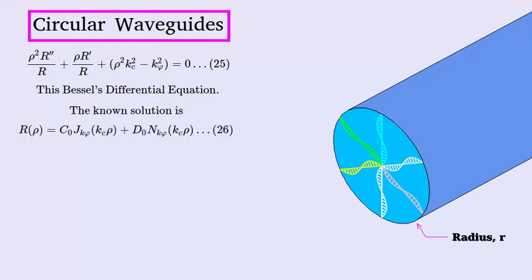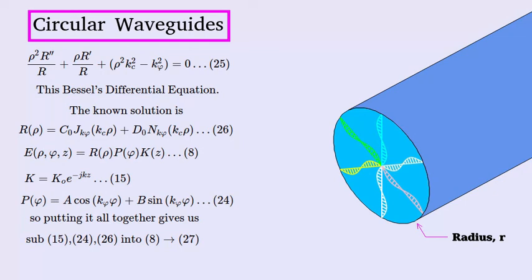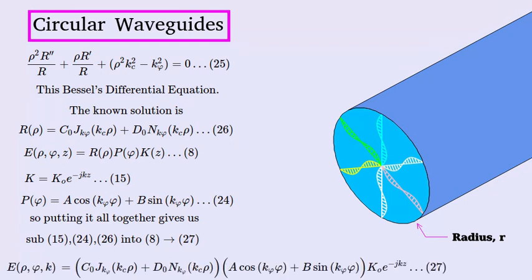So the known solution to this differential equation is shown here, with special functions J and N, with constants C0 and D0. These are all of the functions that we've found already. We can combine them by making this substitution. And so we'll end up with this large equation here at the bottom of the screen, where it will fit.